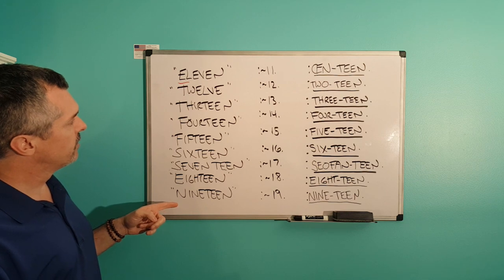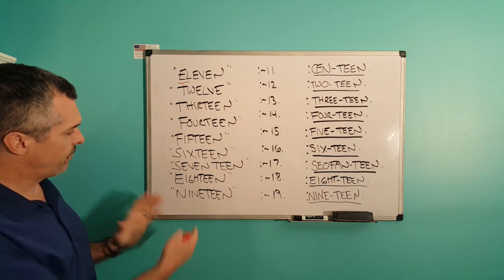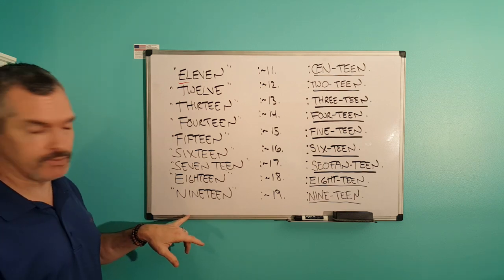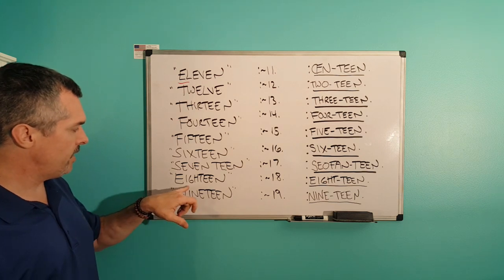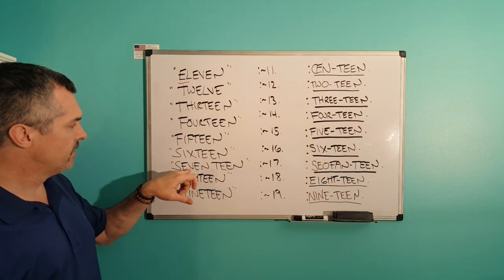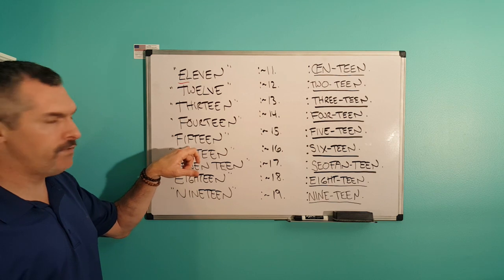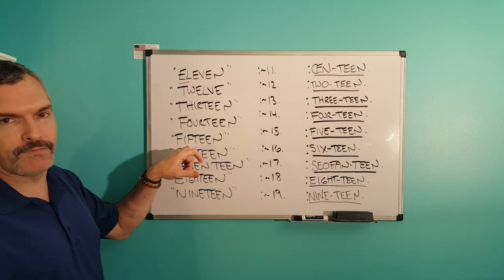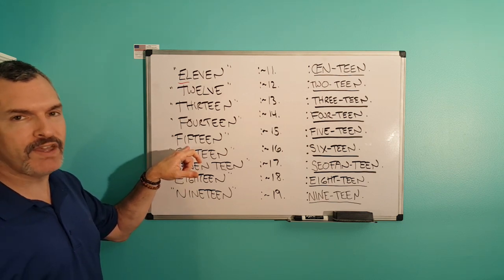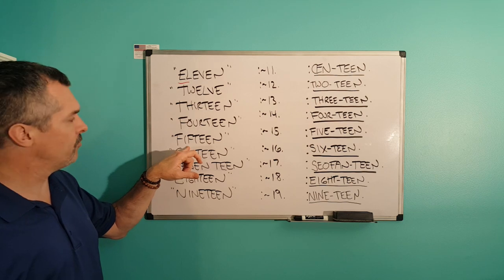And I noticed if you take the first part of the word going backwards, we have nine, eight, seven, six, and then we have fifth. What's a fifth? I know what a fifth is, but what's a fifth?